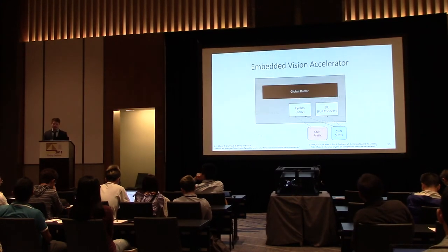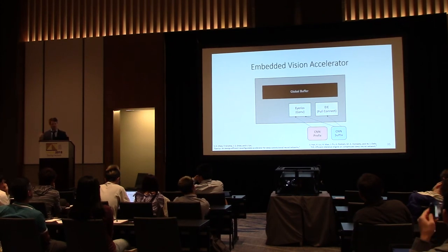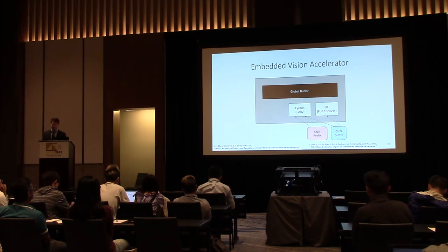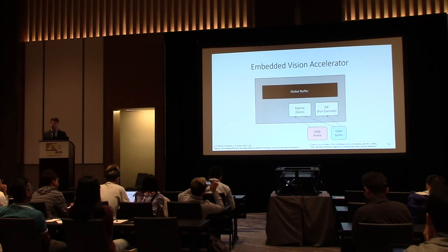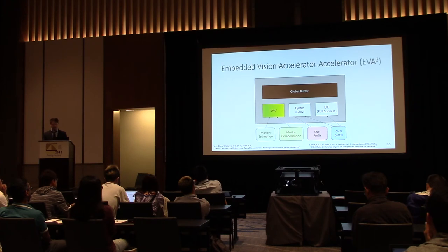For hardware, we wanted to compare against top-of-the-line accelerators rather than GPUs. We look at IRIS and EIE. IRIS is a systolic array-based CNN accelerator especially good at convolutional layers. EIE is a compression-based sparse accelerator for fully connected layers. Both are optimized for their specific use case: the CNN prefix is mostly convolutional layers handled by IRIS, and the suffix uses a combination of both.